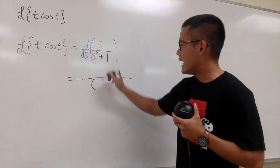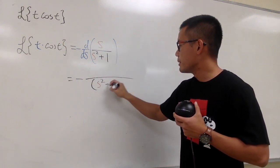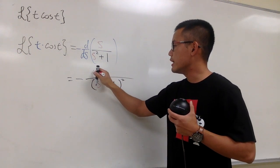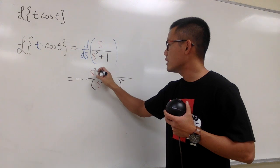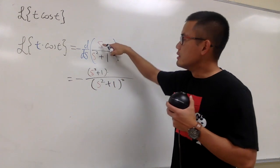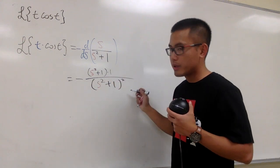Square the denominator, so we have s squared plus 1 squared. And then the quotient rule says, keep the bottom function, which is s squared plus 1, and then multiply by the derivative of the top. Derivative of s in the s world is just 1.